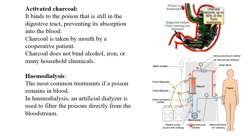Activated charcoal binds with the poison still present in the digestive tract and prevents its absorption into the blood. The charcoal is taken by mouth by cooperative patients. Charcoal does not bind to alcohol, iron, or many household chemicals, but for other poisons, it actively binds the chemical and prevents absorption into systemic circulation.